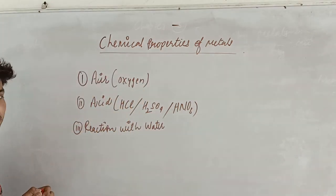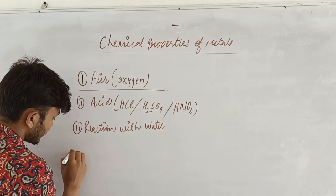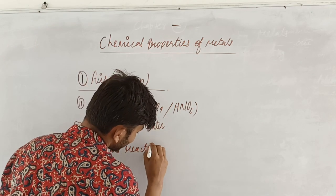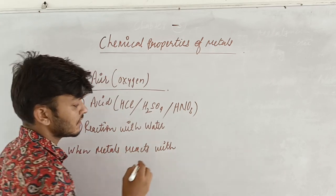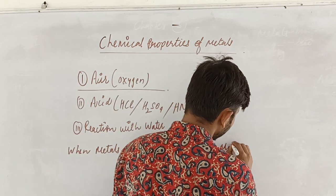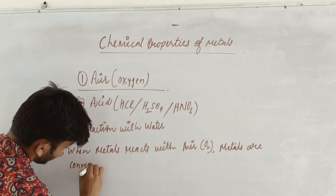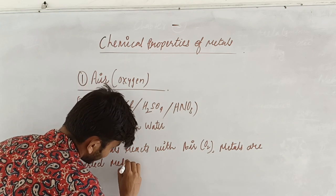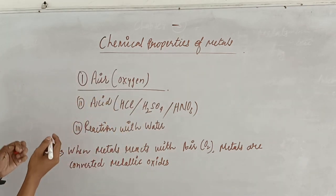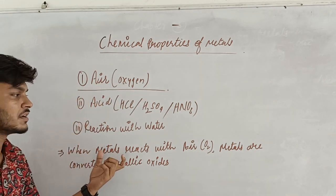So let's talk about the first one, that is the reaction with air or oxygen. When metals react with air or oxygen, metals are always converted into metallic oxide.